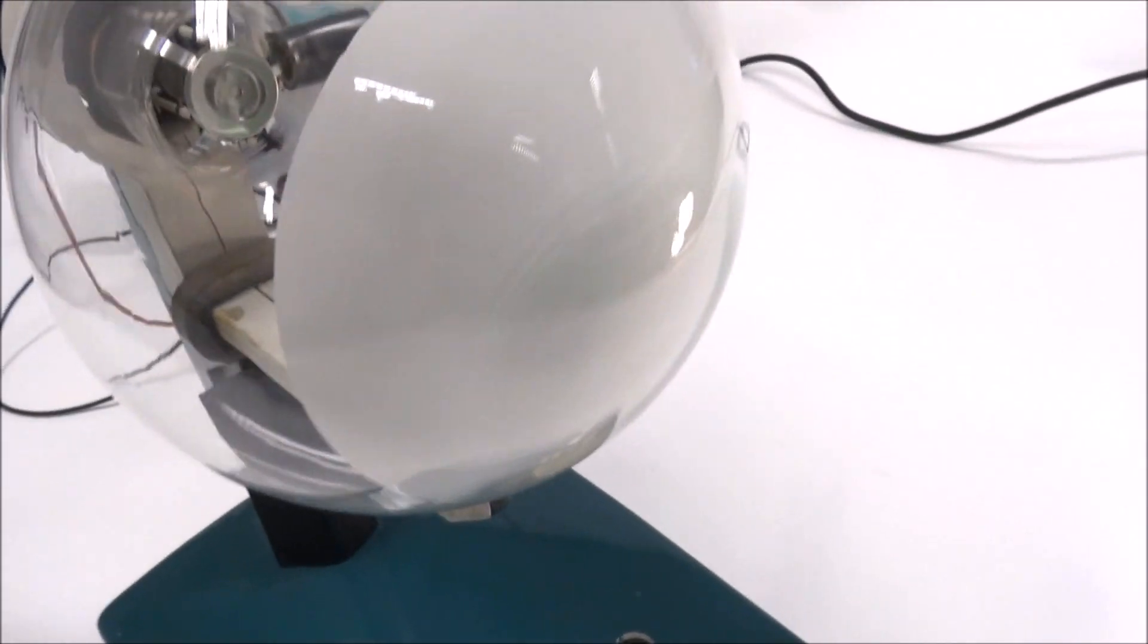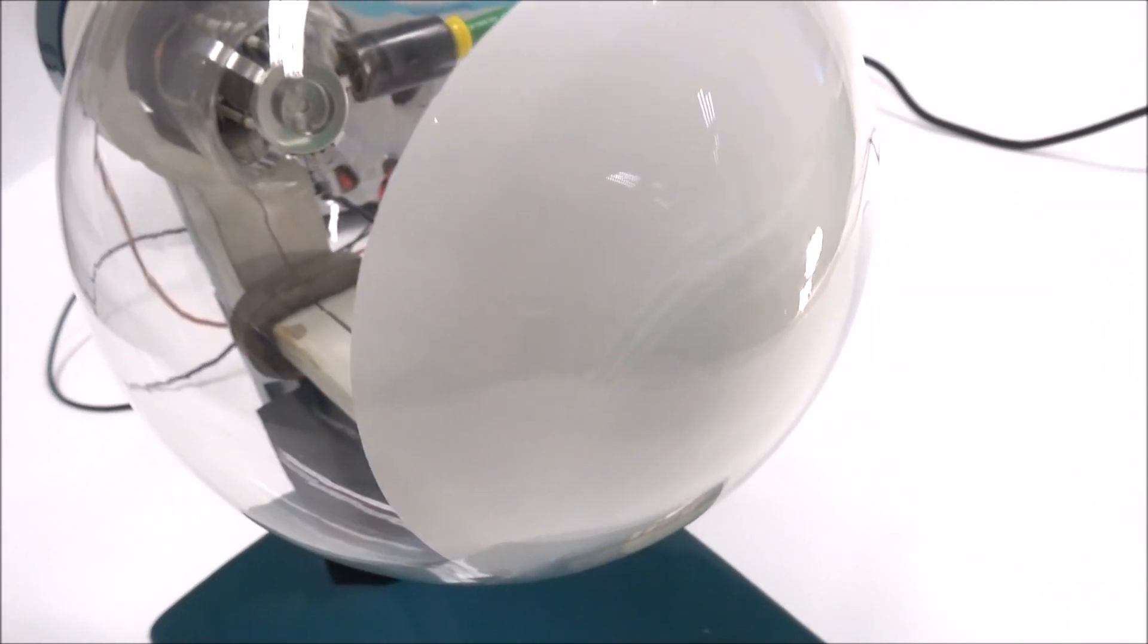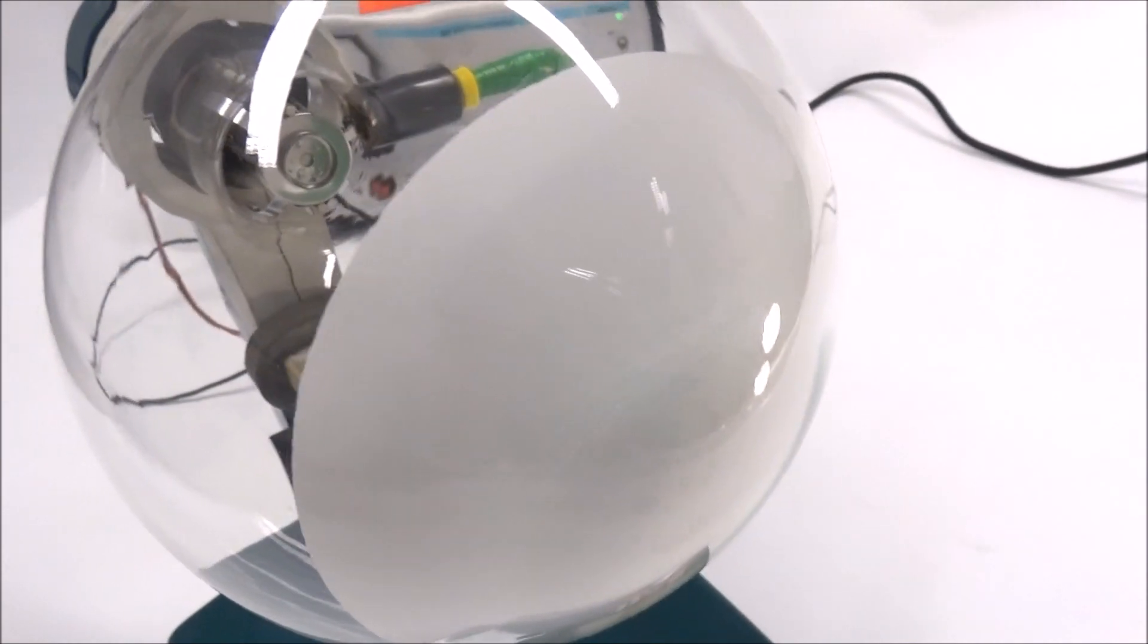Now the electrons hit the screen over here and they cause an emission of light. So we don't see the color of electrons because they're colorless, but what we see is where the electrons land, we see a little green spot.